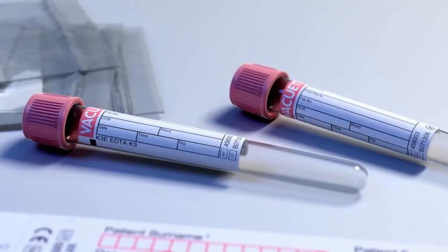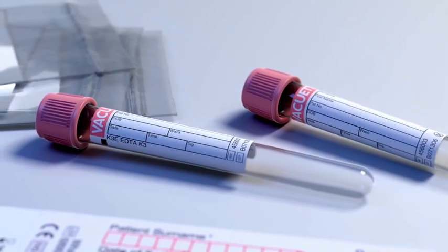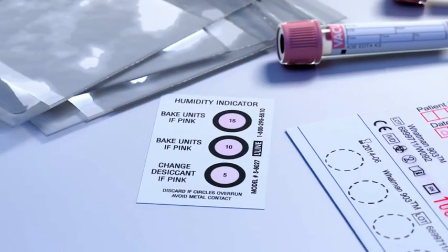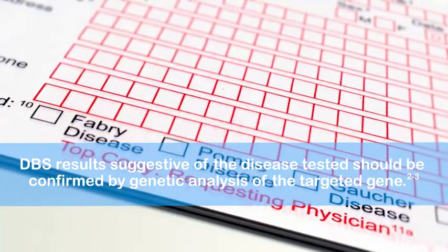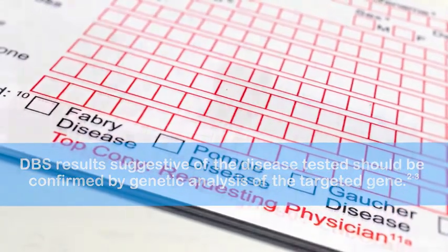DBS kits allow an easy and accurate quantification of the missing enzyme activity. DBS results suggestive of the disease tested should be confirmed by genetic analysis of the targeted gene.